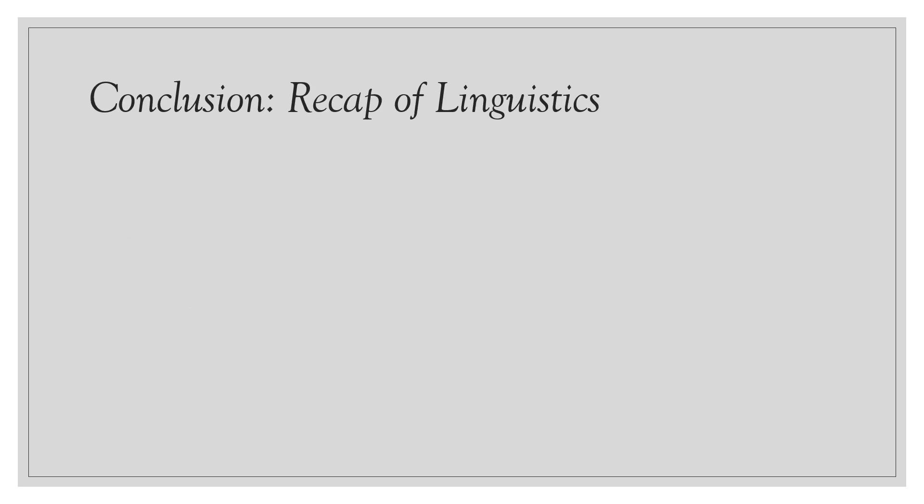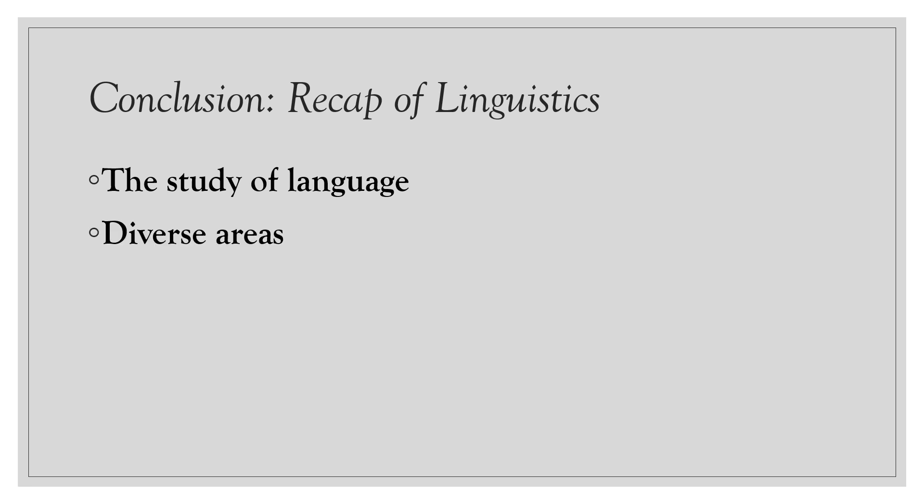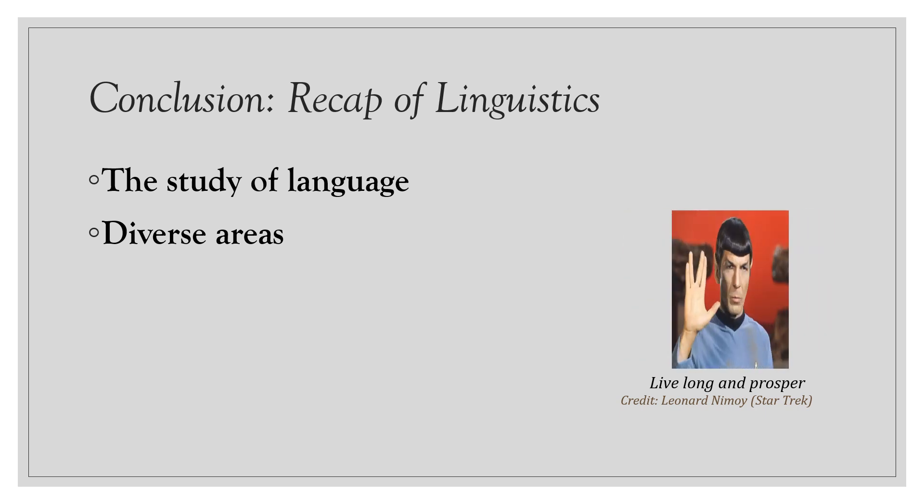All right, before I end this very short video on linguistics, let me recap today's content. First, linguistics is the scientific study of language — from its constituents, the smallest such as units of sound, to the largest such as clauses and sentences, to meanings and how language or languages are in use. It is not an understatement to say that language is present in every part of our lives, from verbal to gesture, from our interaction with ourselves, other human beings, to machines. Hence, there are also diverse areas of linguistics, where each is dedicated to studying specific aspects of language. All right, that's all for today. See you again in my next video. Goodbye.